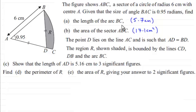I'll also have updated the length of the arc BC we found in part A is 5.7cm. And also in part B the area of the sector ABC, that was 17.1cm².